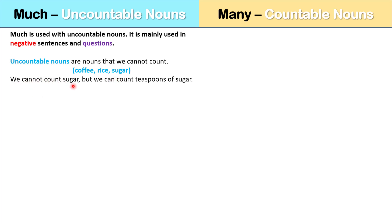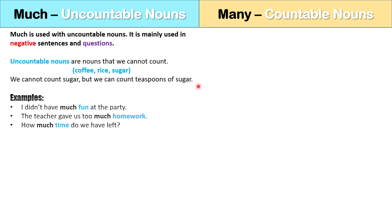We cannot count sugar, but we can count teaspoons of sugar, so teaspoons would be a countable noun, but sugar is an uncountable noun. Examples: I didn't have much fun at the party. The teacher gave us too much homework. How much time do we have left? You can see that fun, homework, and time are all uncountable nouns, which is why we use much in front of them.